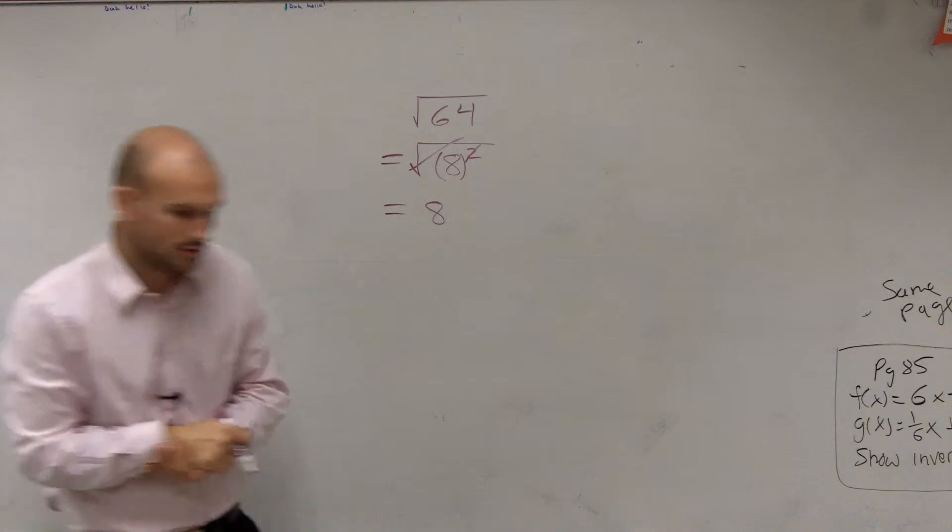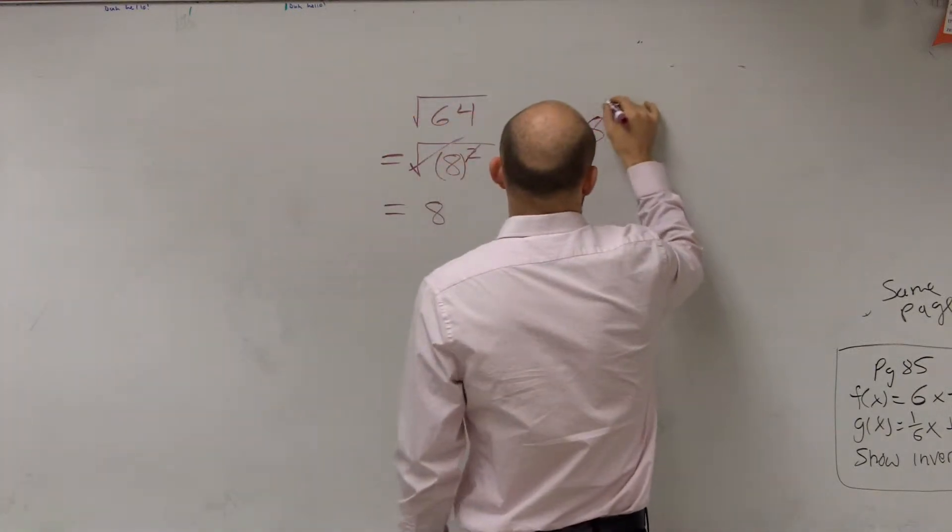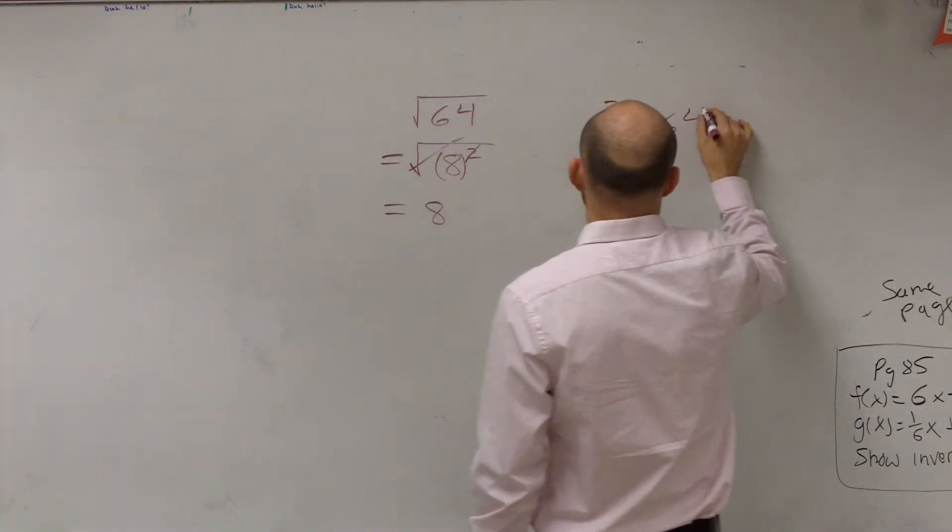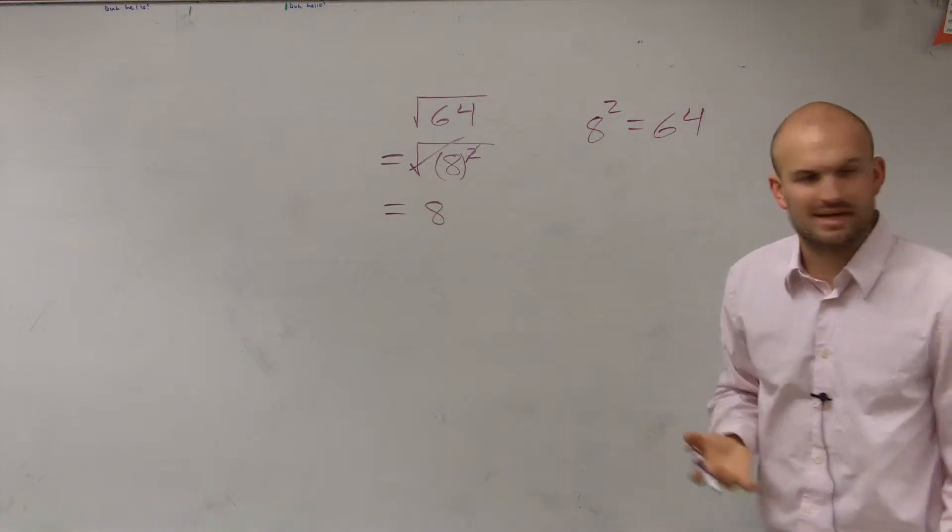Now let's go through a little rule here. 8 squared equals 64. What does that really mean?